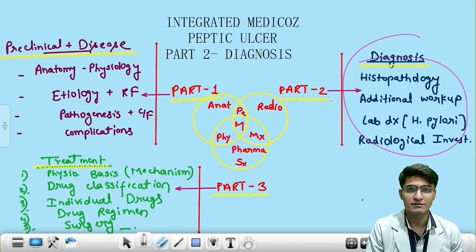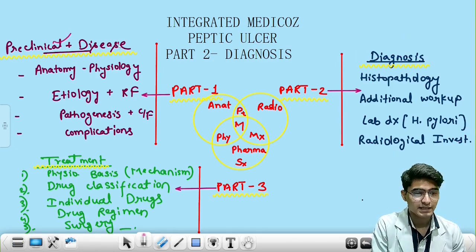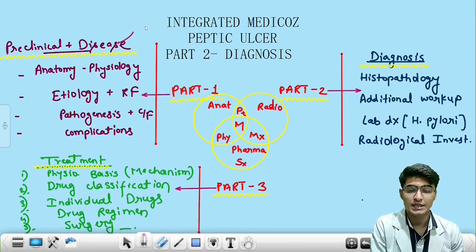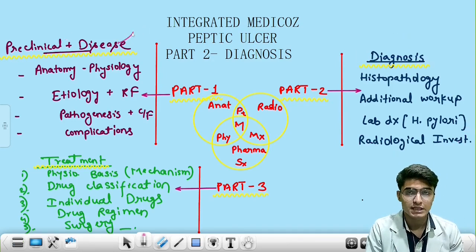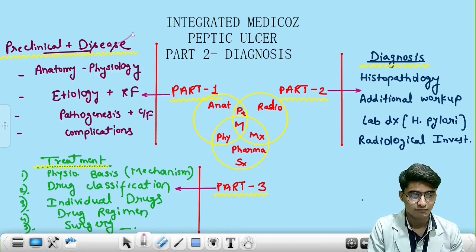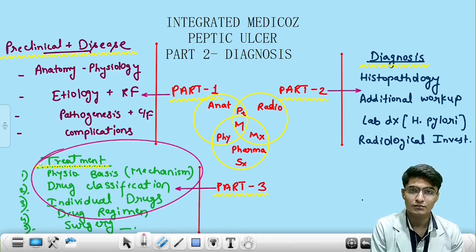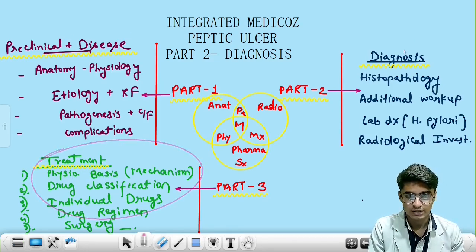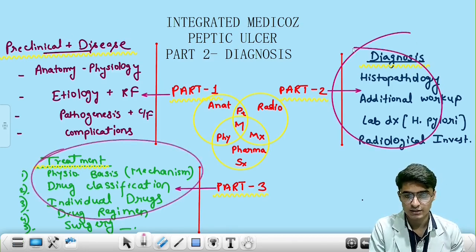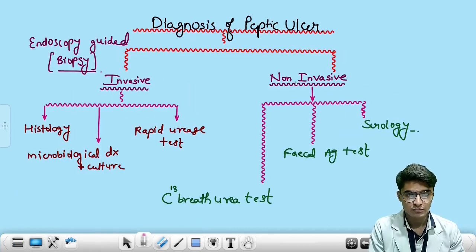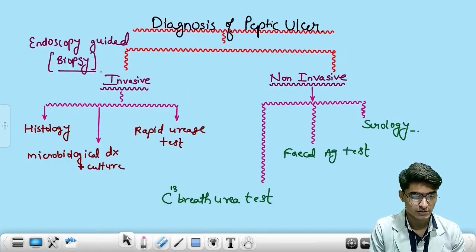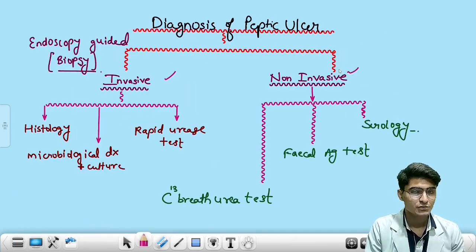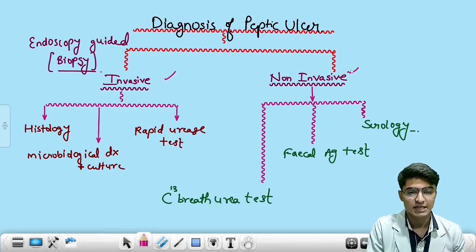We have discussed the preclinical and disease portion in my previous video, and in my upcoming video we will discuss the treatment part. Today we will discuss the diagnosis. So the diagnosis of peptic ulcers involves two categories: first is the invasive procedure, and the other is the non-invasive procedure.